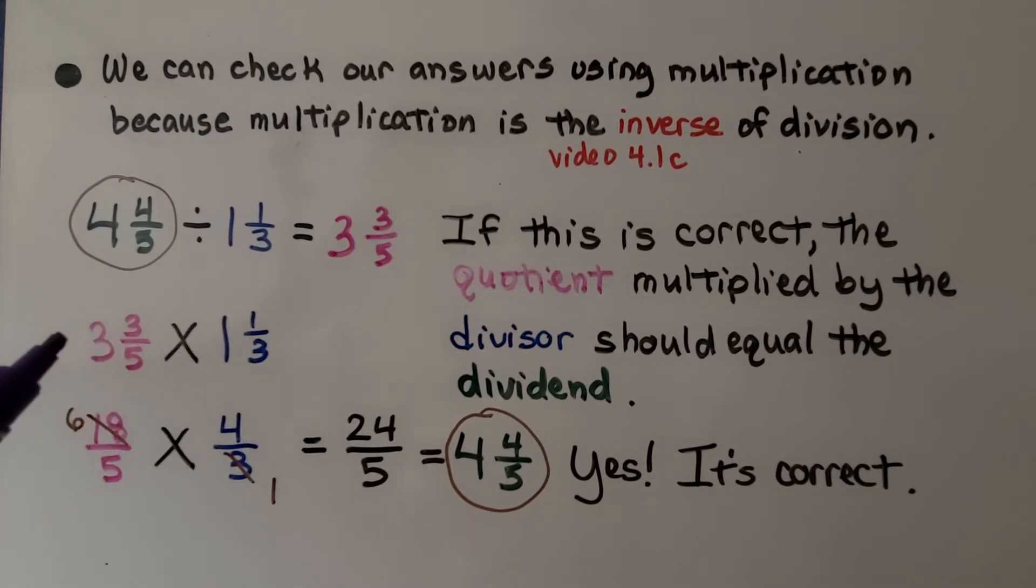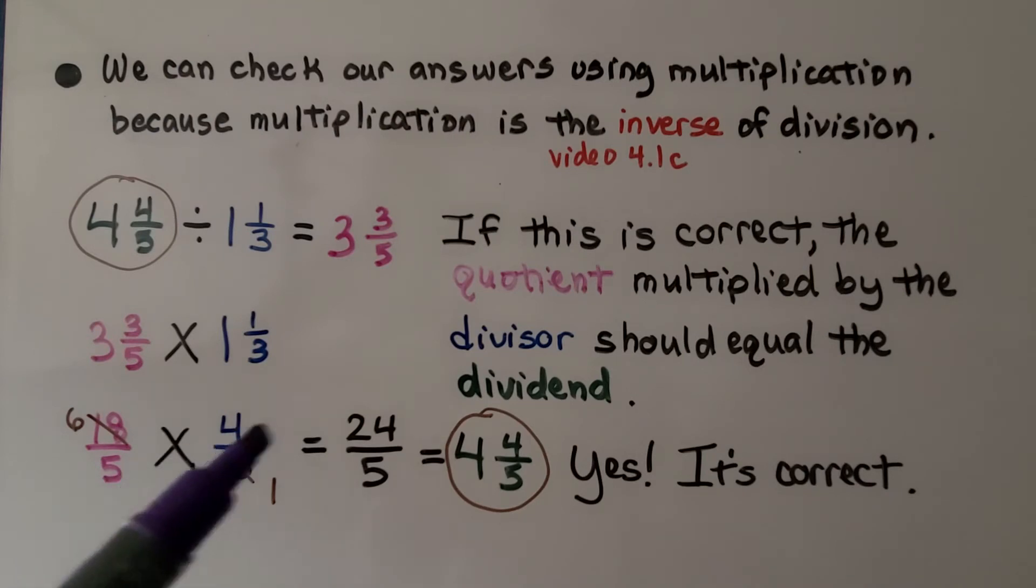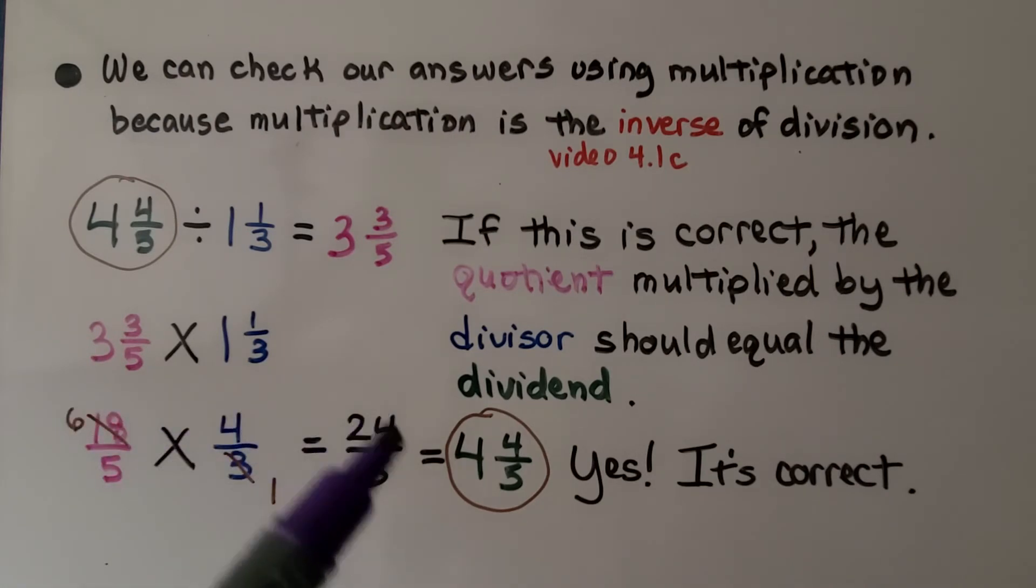We rewrite them as fractions greater than 1. We have 18/5 times 4/3. No reciprocals here, we're multiplying. We use 3 as a common factor for 3 and 18, canceling to 1 and 6. Now we have 6×4 is 24, and 5×1 is 5.